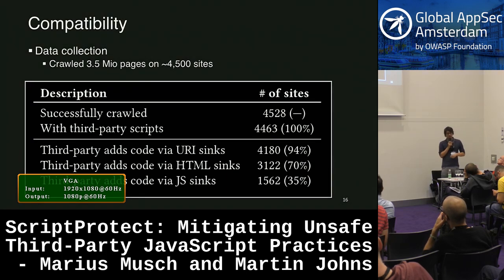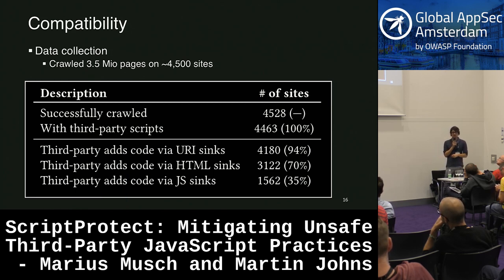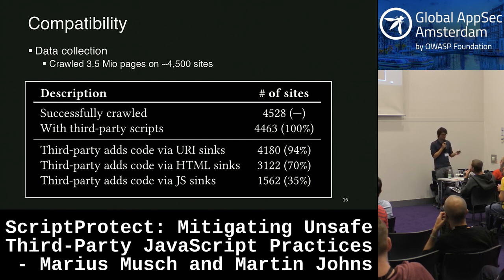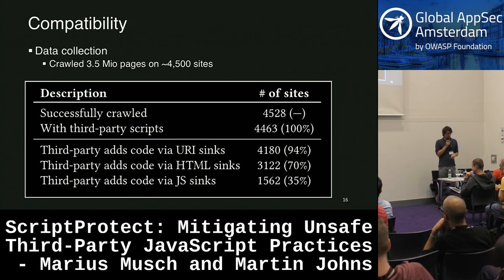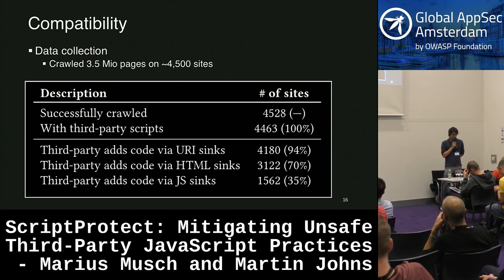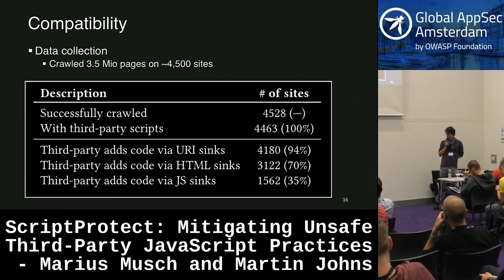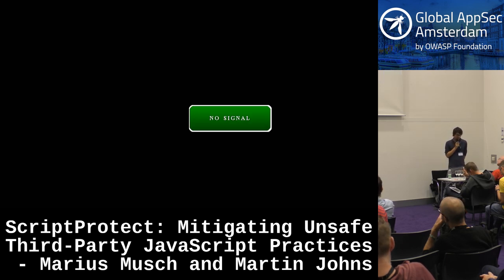That's kind of a problem if you want to be compatible with existing websites without any changes, because changes to third-party code are especially hard — you're not in control of them. For HTML sinks like document.write with just an image tag, luckily it was only 70%. And for something like dynamic additions of JavaScript, it was even less.